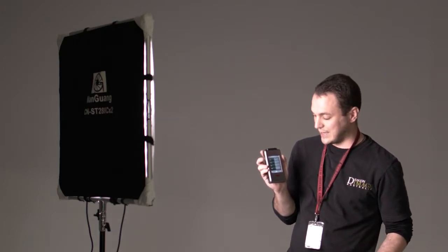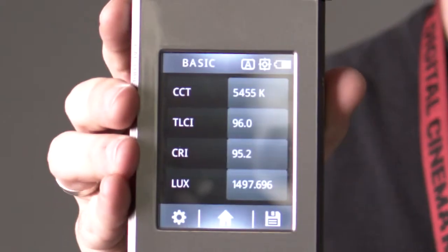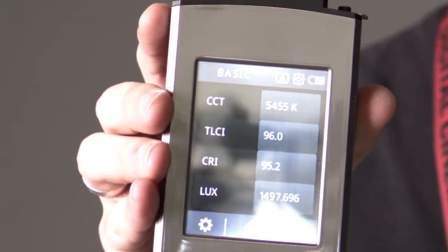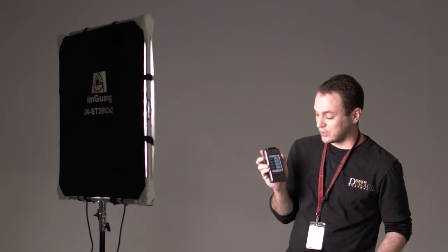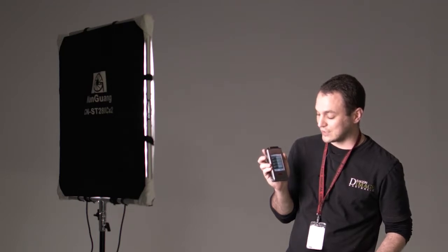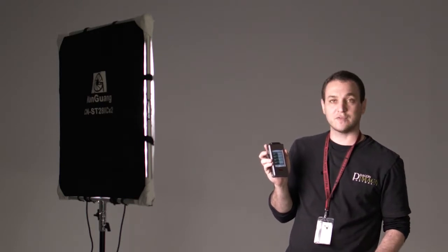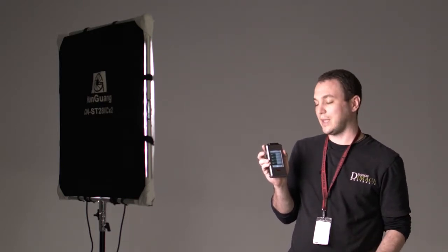You can see here the CCT is 5455 which is daylight, TLCI is 96, CRI is 95.2, and the LUX at one metre at daylight is 1497, which is quite good for something that's so soft and diffuse as you can see on the subject lighting me here.